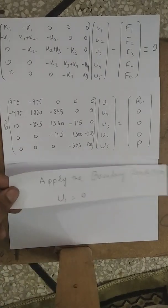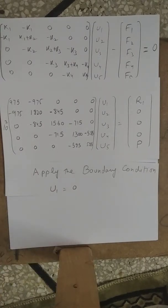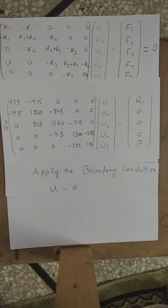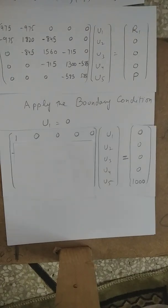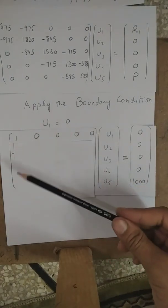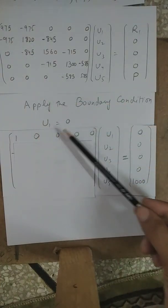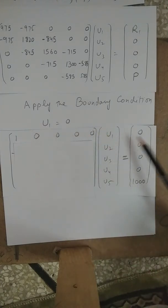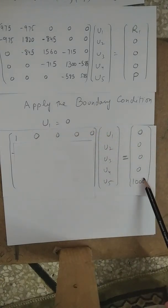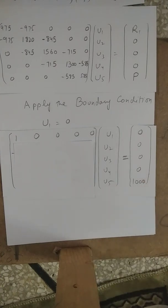The next step is to apply boundary conditions. The first boundary condition is that the member is fixed at node 1, so U1 = 0. The second boundary condition is that the applied load at node 5 is 1000 lb. We apply both conditions: placing 1 in the first row/column position for U1 = 0 and setting P = 1000 lb.